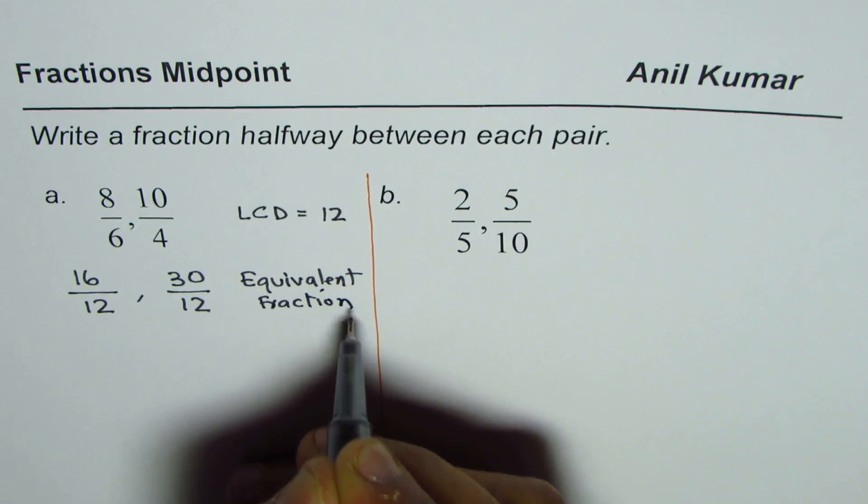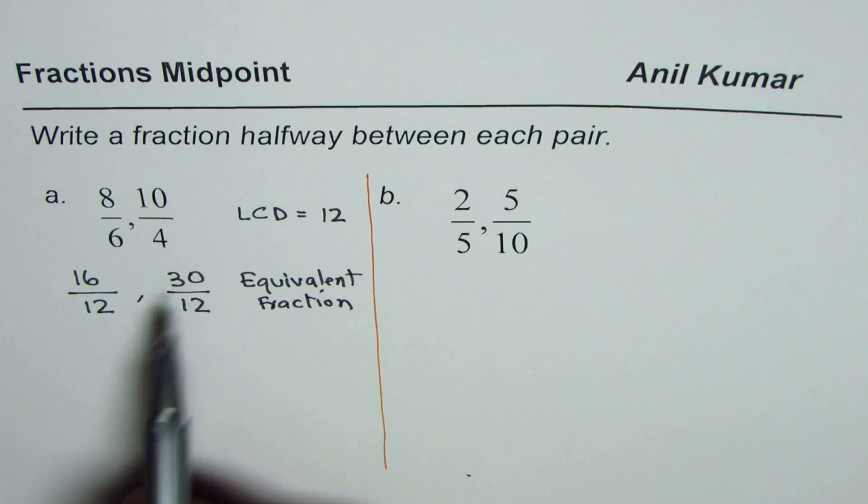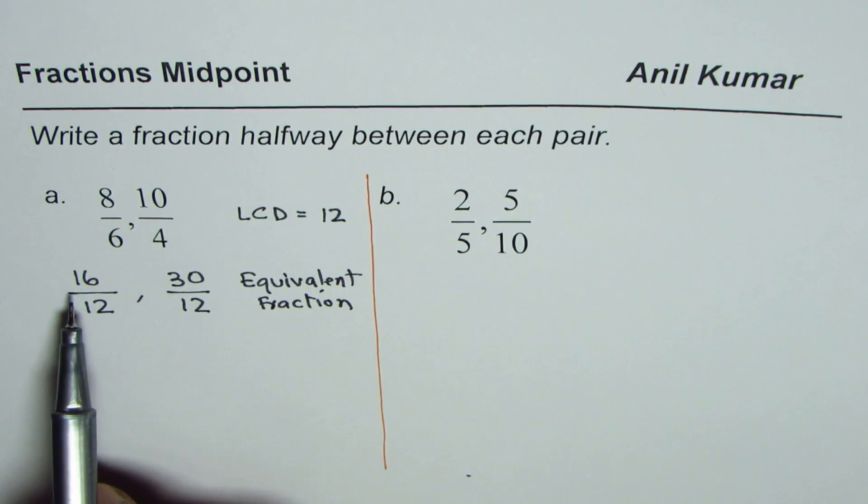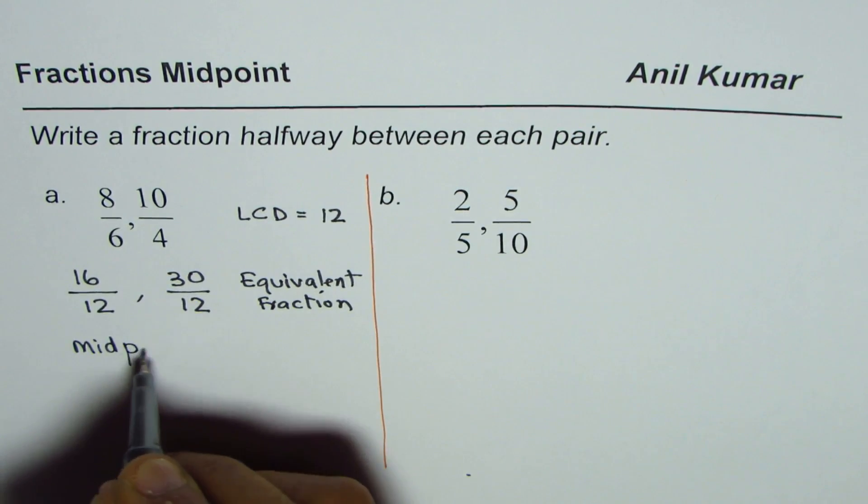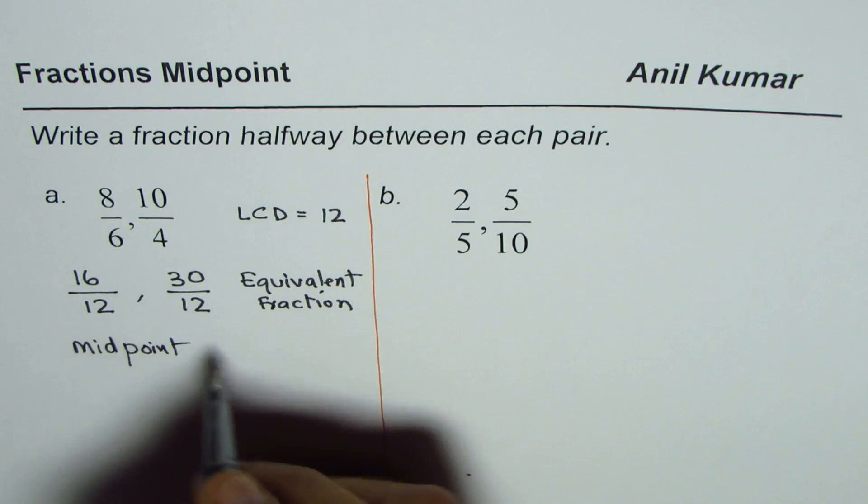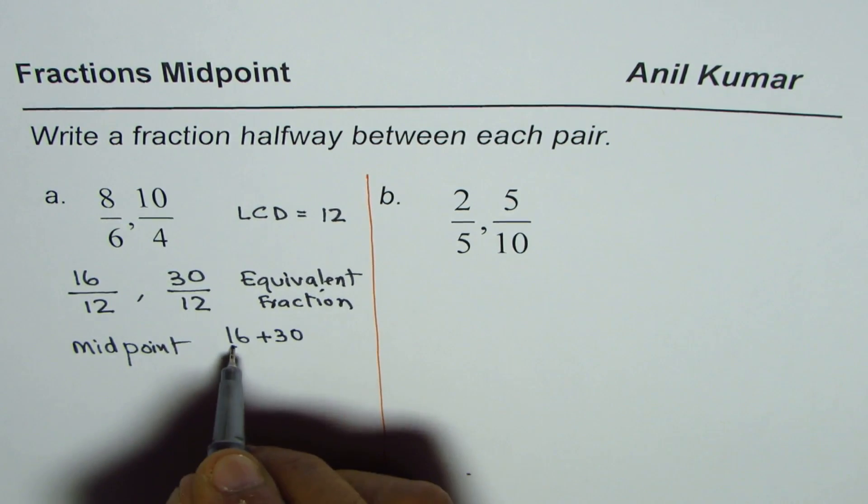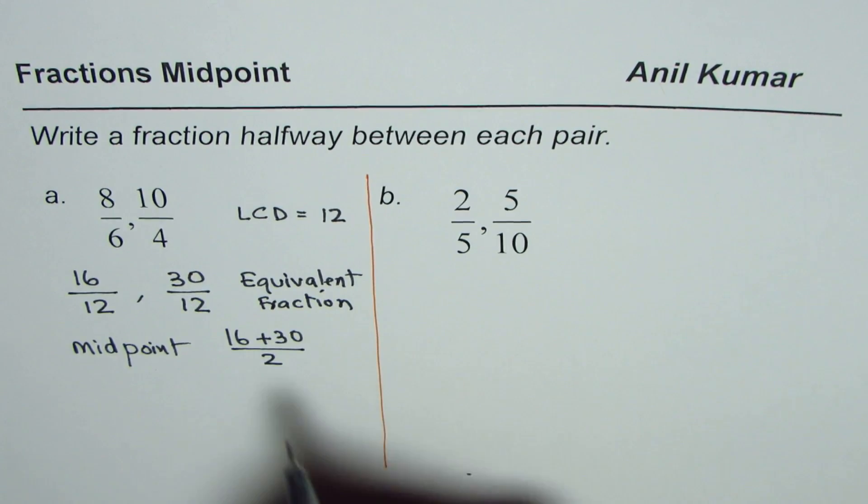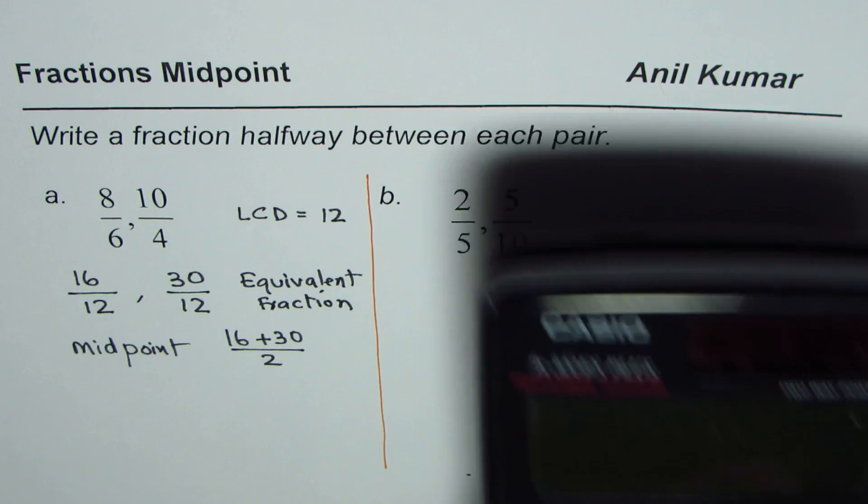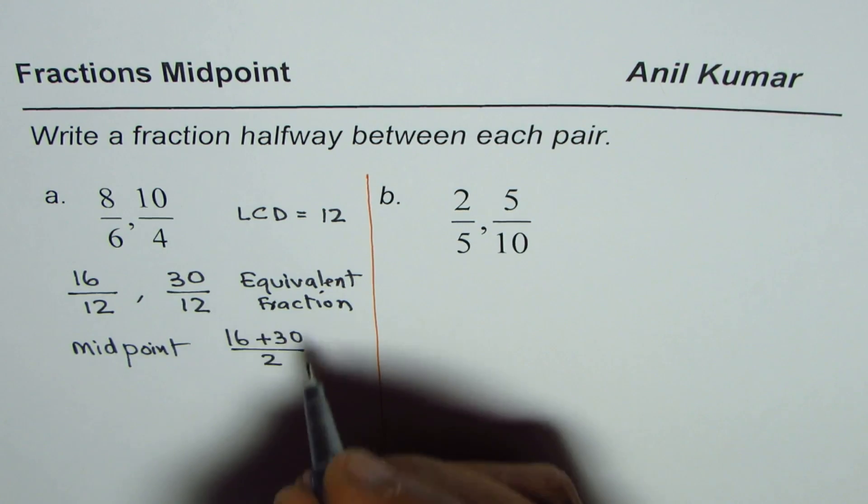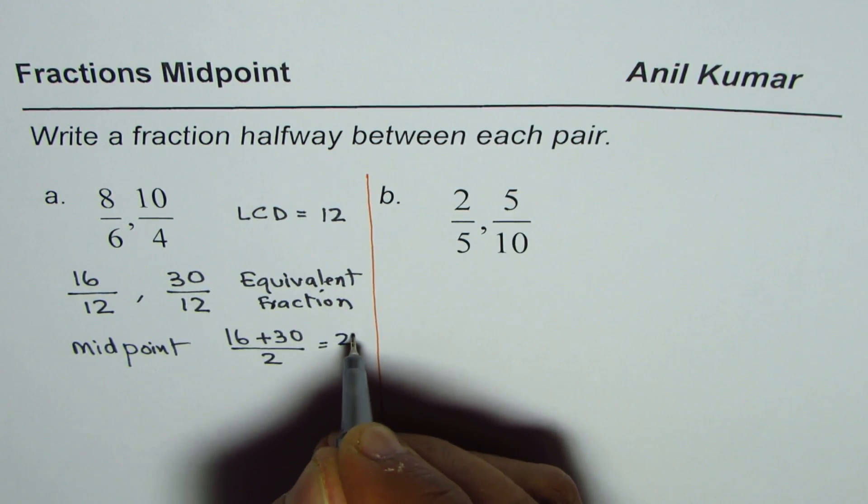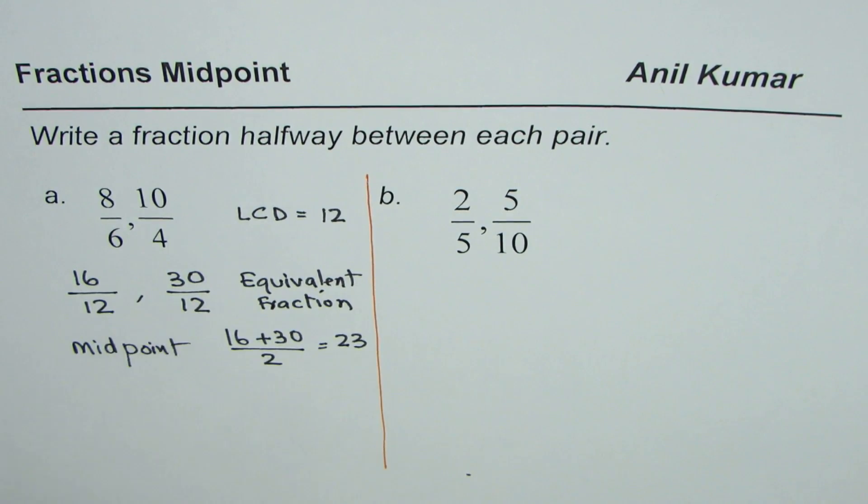Now it is easy to find the midpoint. Midpoint is right in the center. So the midpoint will be you can add 16 and 30 and then divide by 2. So 16 plus 30 let us do it by calculator. 16 plus 30 equals to 46. And when you divide this by 2 you get the number 23. Of course the denominator has to be 12.